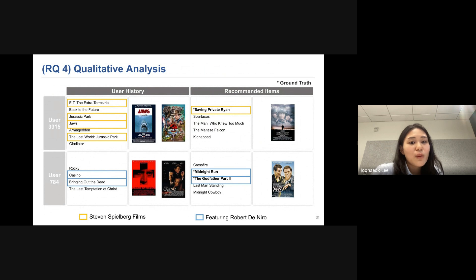And lastly, we perform qualitative analysis. So for example, by looking at the user history, we can know that user 3315 prefers Steven Spielberg films, such as ET, Jurassic Park, JAWS, and so on. And our model also recommended Steven Spielberg films, Saving Private Ryan. And this cannot be recommended using only content features because Saving Private Ryan is totally different content. But because our model can capture the detailed preference, it can recommend content-wise different movies. And we can see a similar thing happens for user 784.